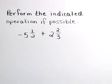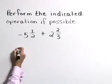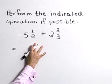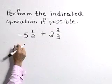Perform the indicated operation, if possible. Negative 5 and 1 half plus 2 and 2 thirds. Here we want to sum fractions, so we're going to need a common denominator. I think I'll also put these in improper form.